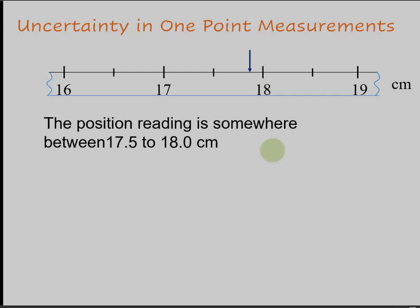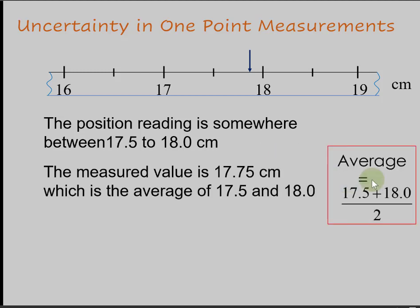You write the measured value as the average of this range. But the average is not the exact reading. You need to be honest to the readers and tell them that there is some fuzzy area in the listed value. That's where the plus-minus thingy, what we call uncertainty, comes in.